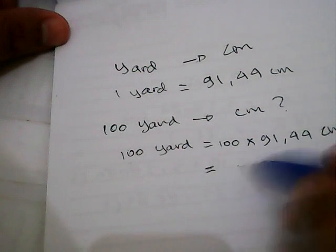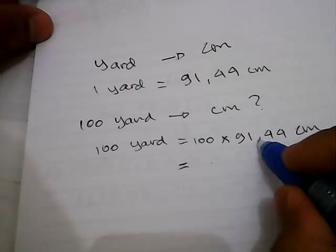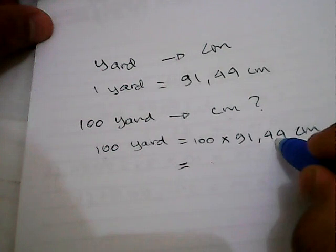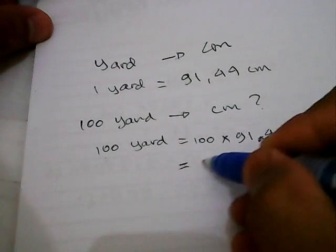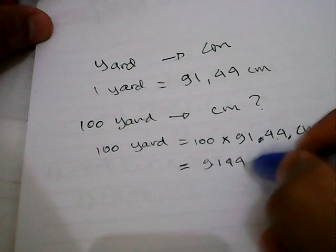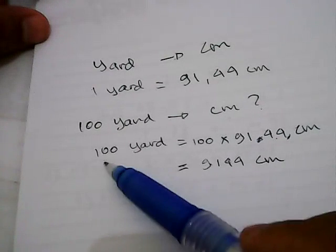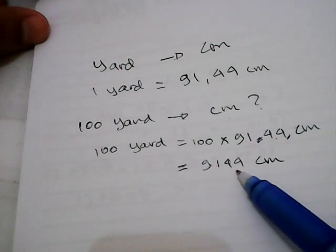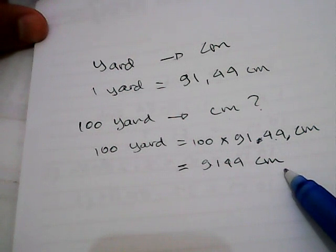It's equal to 100, we need to have two zeros here, so we need to put this comma over here. The result is 9144 centimeters. So 100 yards is equal to 9144 centimeters.